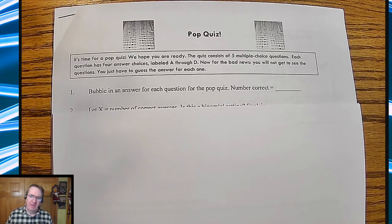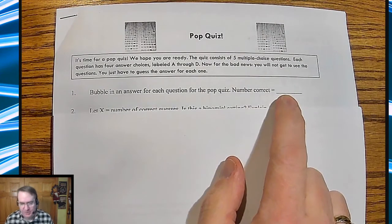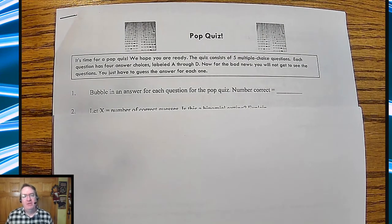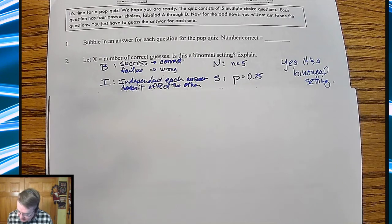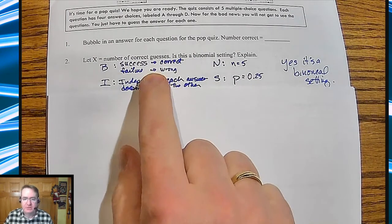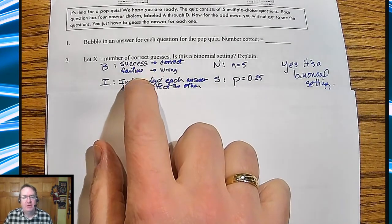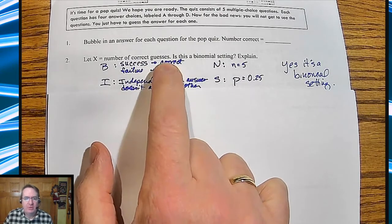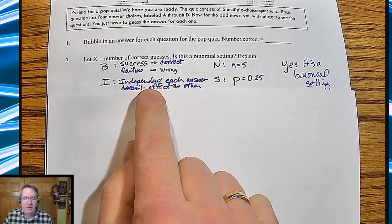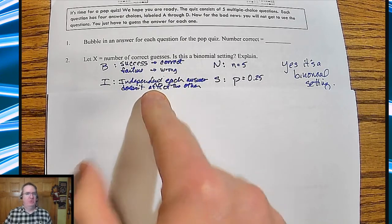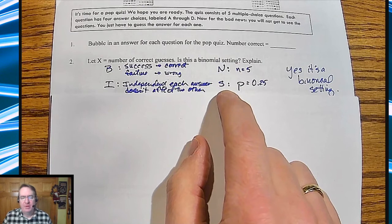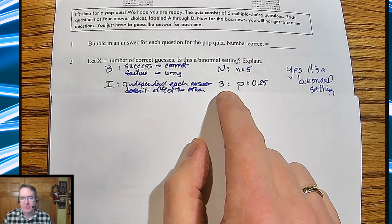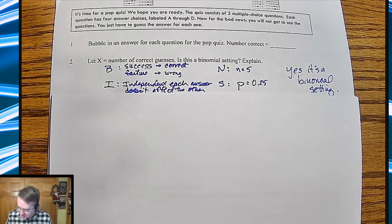Then I go through and give you the answers. You write down the number correct. That's to give you an idea of something almost being totally random. We talk through whether the number of successes — correct guesses — is binomial. The answer is yes, because you've got either right or wrong. Independent — each answer doesn't affect the other because you don't know what the questions are. Number of trials is five, probability is one out of four, 25%. So it is a binomial setting.